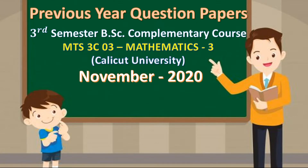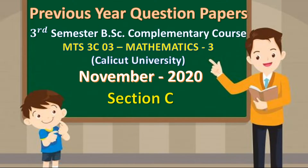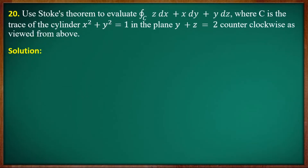We are going to discuss the previous question in the third summary, the complementary question. We are going to discuss the first question in November 18th. We are going to discuss Section A and Section B, and then Section C. Section C is the first question, or the 20th question.